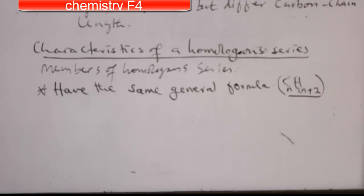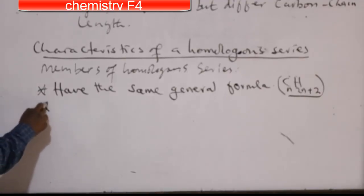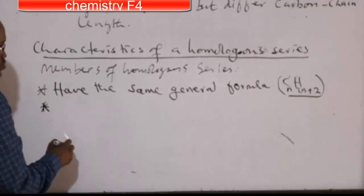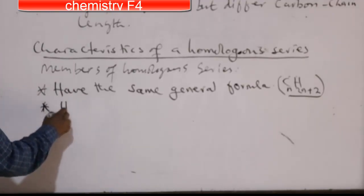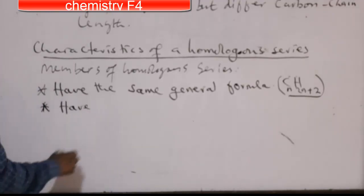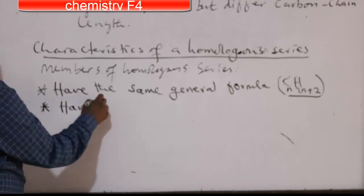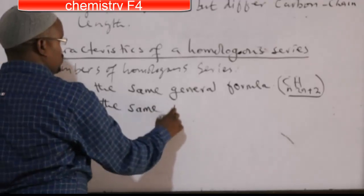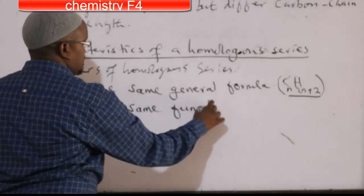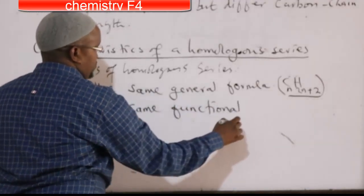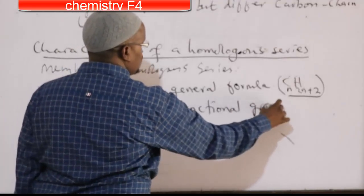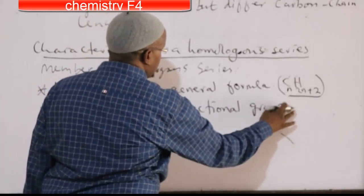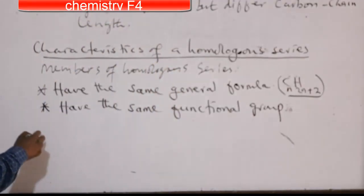Members of a homologous series must have the same general formula. Number two: they must have the same functional group. Members of a homologous series must have the same functional group.